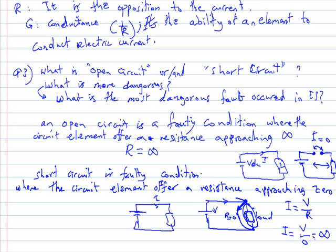Current equal to infinity means that this source will be damaged if we didn't remove the source from the connection here.